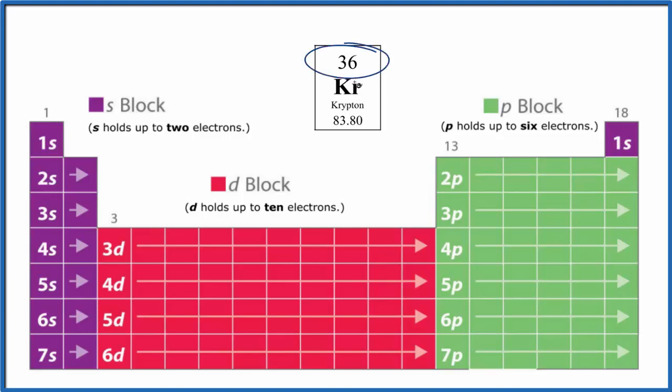So Krypton, atomic number 36, means it has 36 protons. Protons equal electrons in a neutral atom. All of these atoms on the periodic table are neutral, so we have 36 electrons to work with.